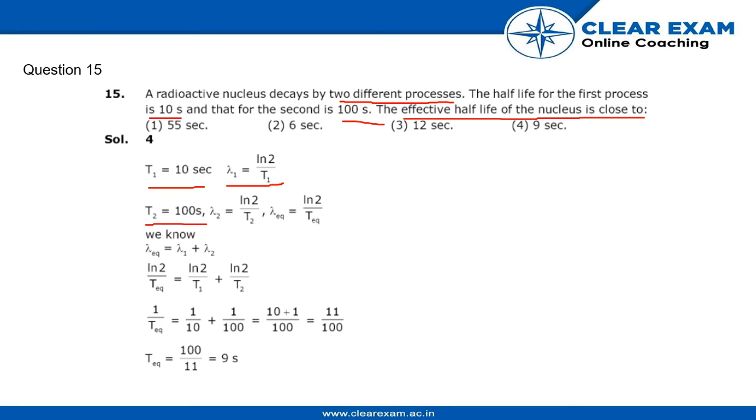log 2 by T equivalent. We know lambda equals lambda 1 plus lambda 2, so we put the values in the formula. We get this expression, then we put the respective values within that formula, and we get 1 by T equivalent equals 1 by 10 plus 1 by 100, equals